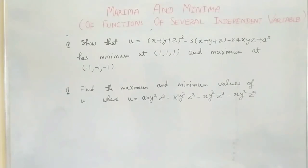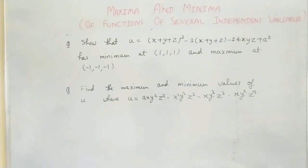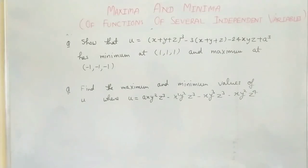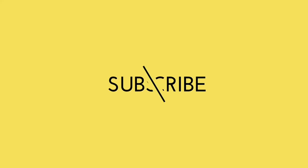Then check: if the two determinant values alternately change sign, it is maximum; if all three are positive, it is minimum. The second numerical is: u = a·x·y·z³ minus x·y·z³ minus x·y·z³ — find the maximum or minimum value. See the related videos for more on these numericals.